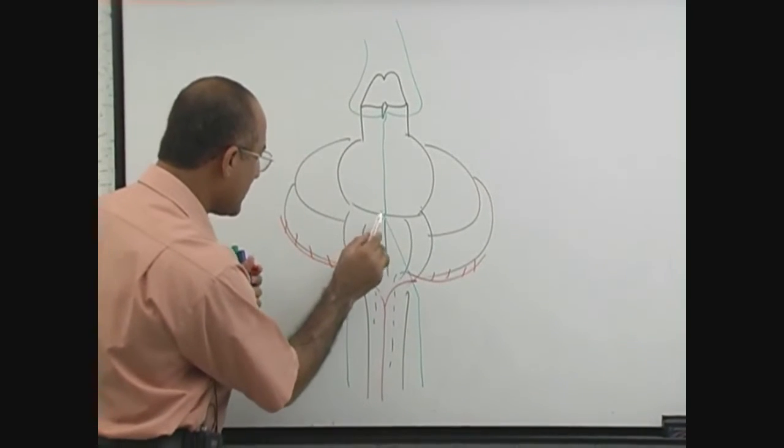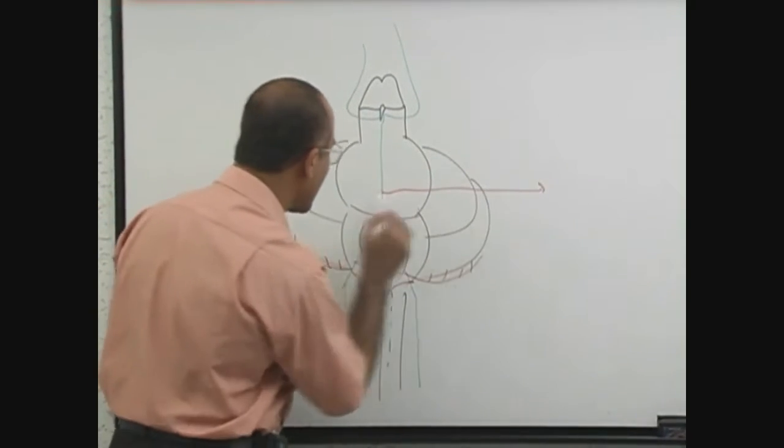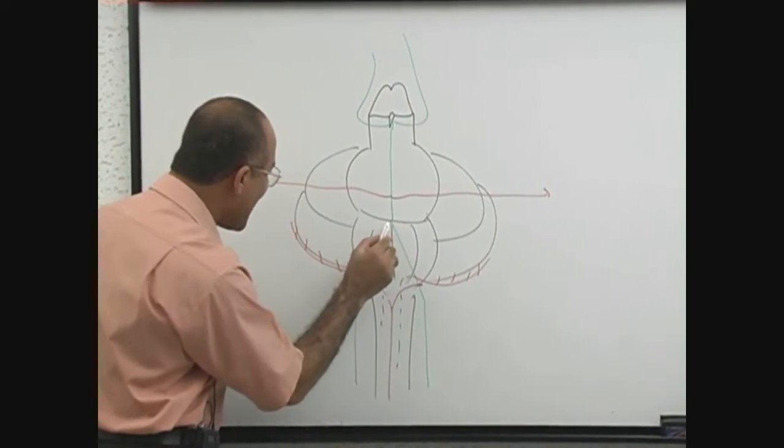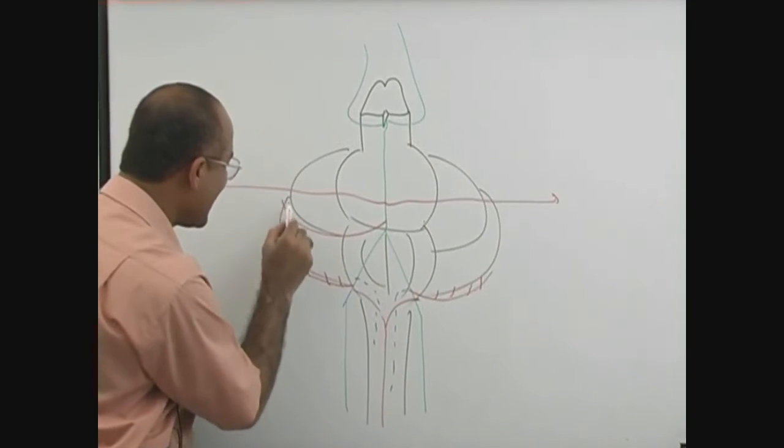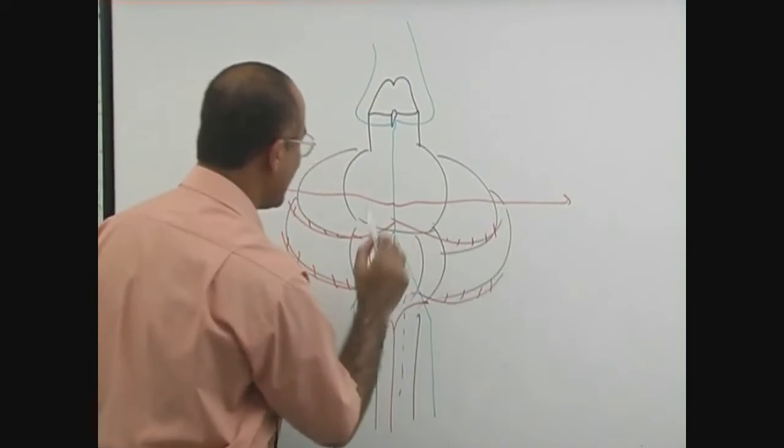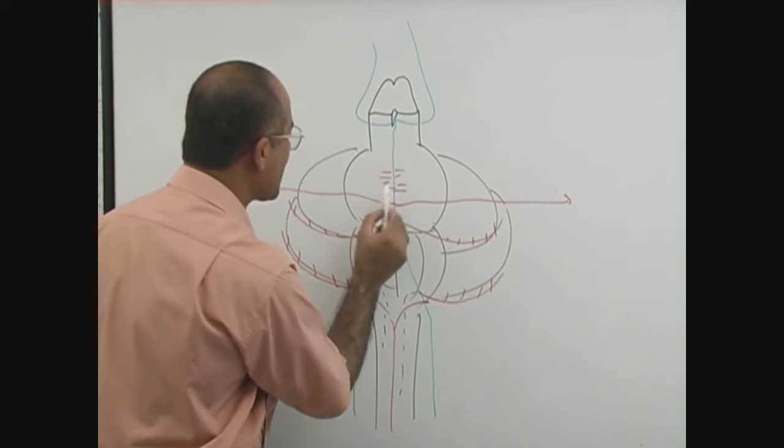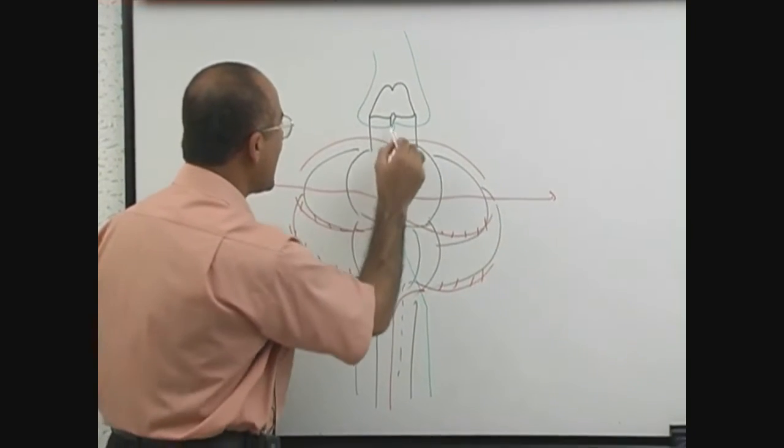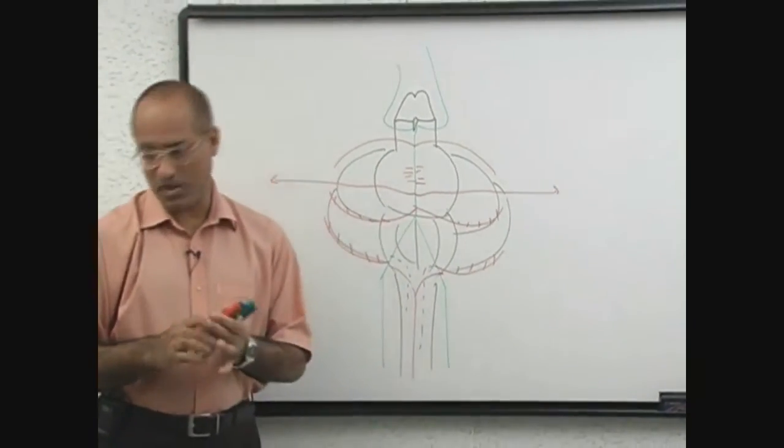And this is AICA, labyrinthine, and now AICA, okay, and pontine. That's good. And superior. And what is this?